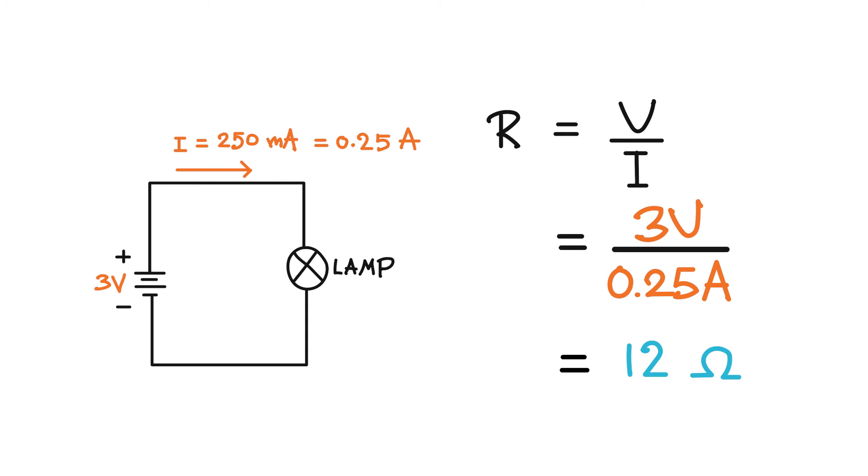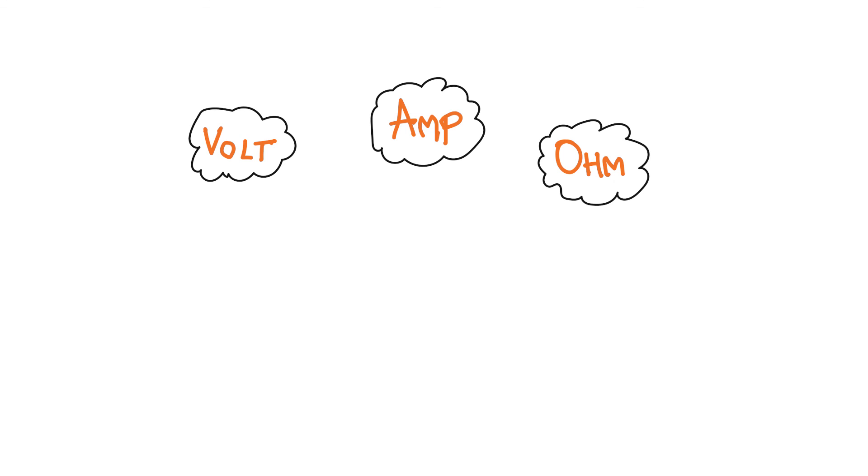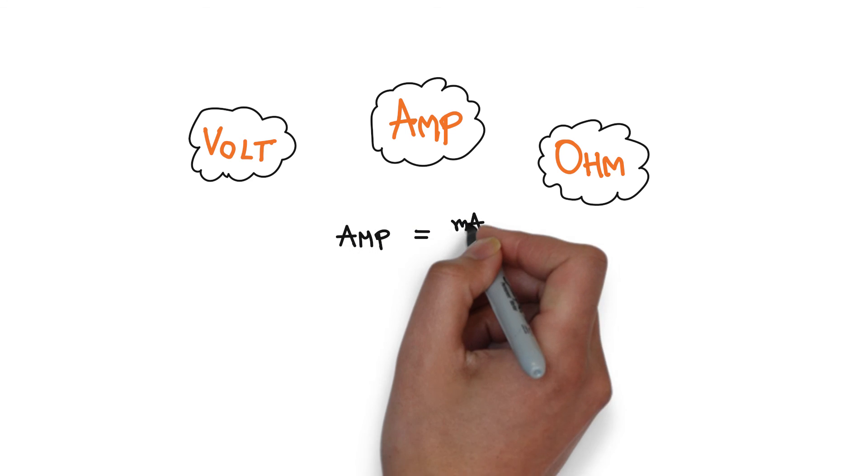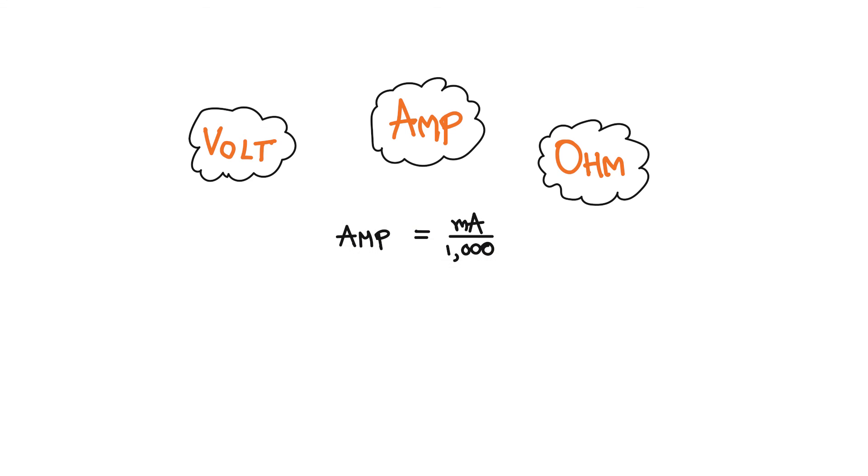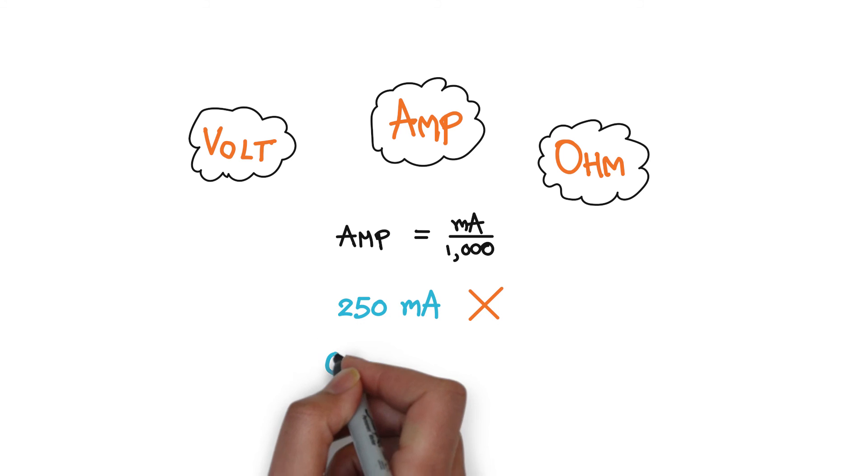The most important thing to remember about Ohm's law is that you must always do the calculation in terms of volts, amperes and ohms. For example, if you measure the current in milliamps, which you often do in electronic circuits, you have to convert the milliamps to amperes by dividing by 1000. For example, 250 milliamps is 0.25 amp.